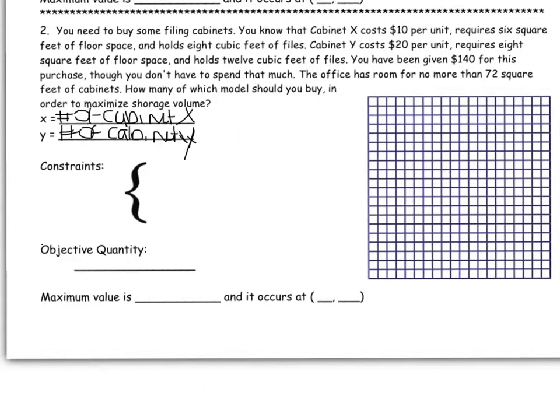Now I'm going to look for my objective quantity. What is it that I am trying to maximize or minimize? So I usually go to the end. How many of each model should we buy in order to maximize storage space?